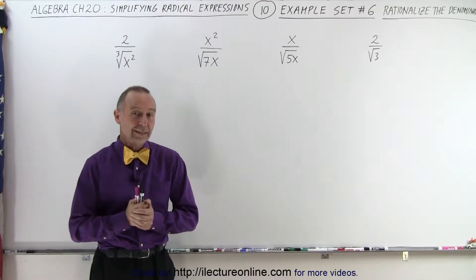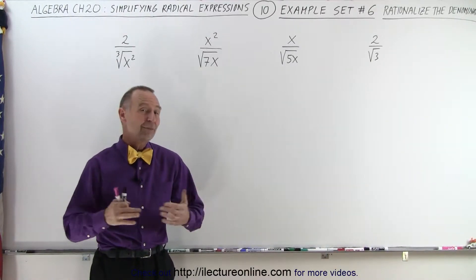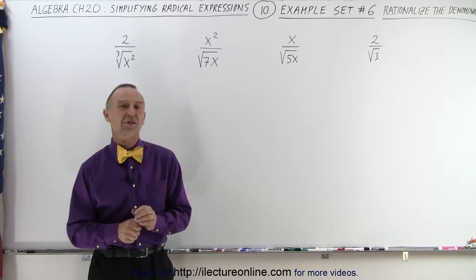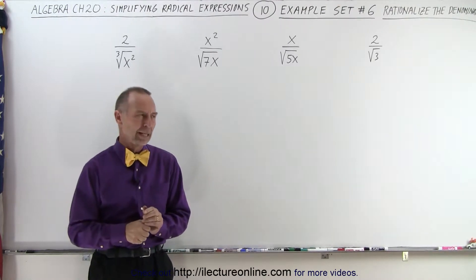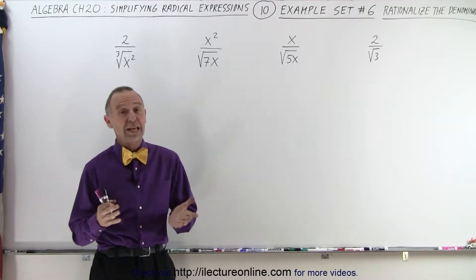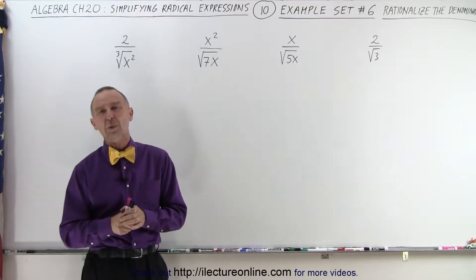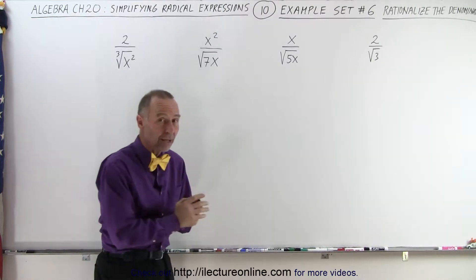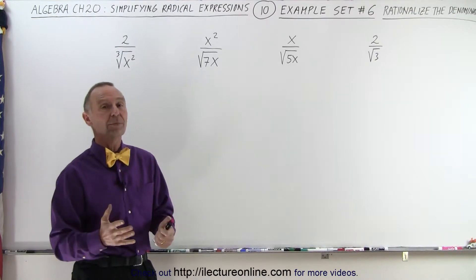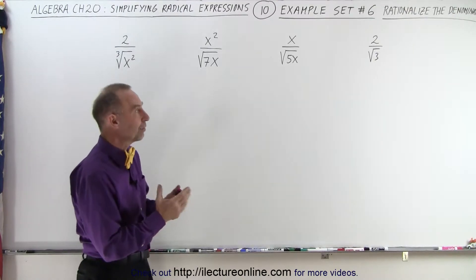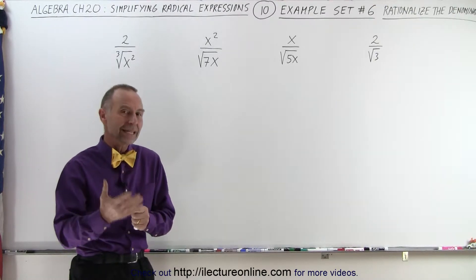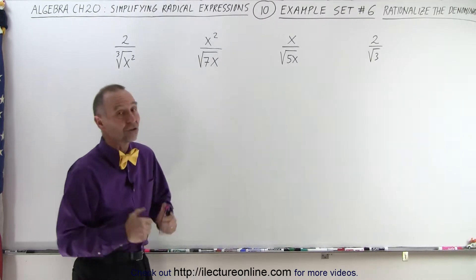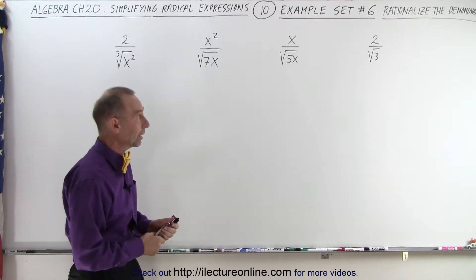Welcome to our lecture online. The next type of simplification is what we call rationalizing the denominator. It's not always strictly simplification, but it's definitely the way we want to handle radicals that appear in the denominator — we simply don't want them there, we want to get rid of them. There's a certain technique we use to do that, and it's called rationalizing the denominator.